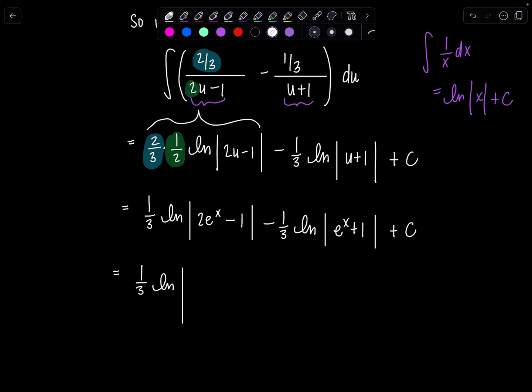Now I do want to say something. This term does not need the absolute value bars because I know e to the x is never negative. So e to the x plus 1, that's going to be positive. That's not the case over here because I have 2 e to the x minus 1. So that will be negative for certain values, which is why we need to keep the absolute value bars.